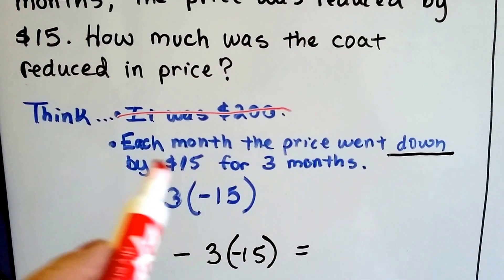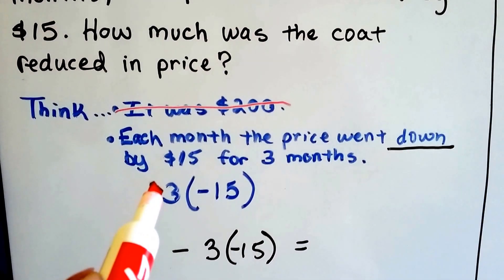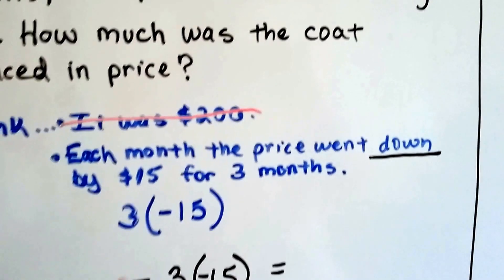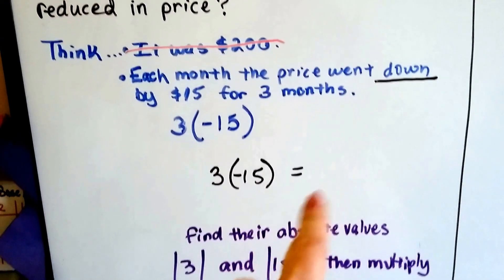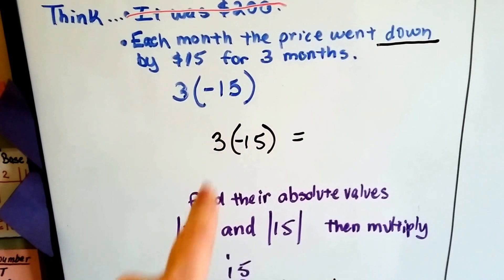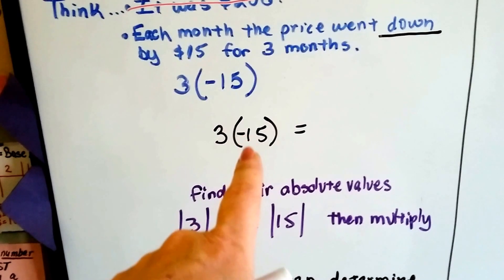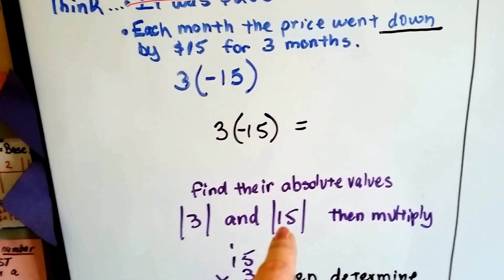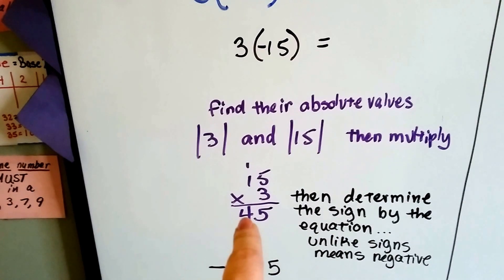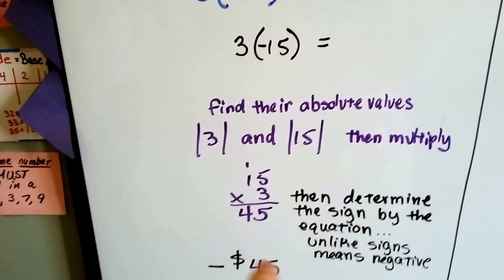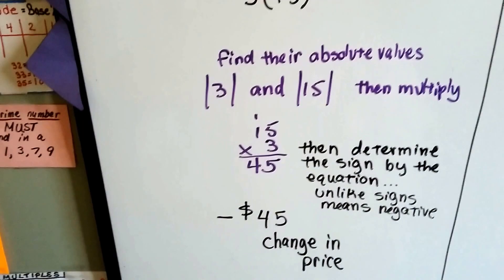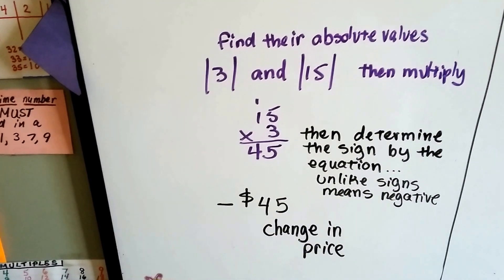It went down in price, so that's a negative. We've got three times negative 15. We find their absolute values: the absolute value of three is three, and the absolute value of negative 15 is 15 — just how far they are from zero. Then we multiply them: 15 times three is 45. We determine the sign by looking at the equation — they're unlike, so it's going to be negative. So there was a negative $45 change in the price.